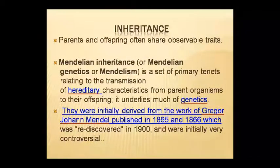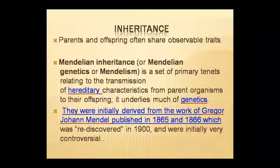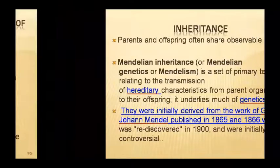Inheritance means that parents and offspring share observable traits — many characters between parents and children appear similar. Mendelian inheritance, also called Mendelian genetics or Mendelism, is the set of primary rules related to the transmission of heritable characteristics from one generation to the next, from parent organism to offspring. This was initially derived in 1865–1866 and rediscovered in 1900, which was initially quite controversial.